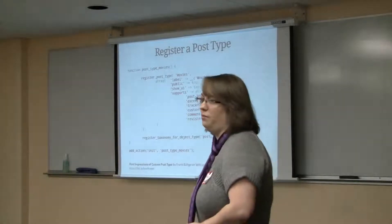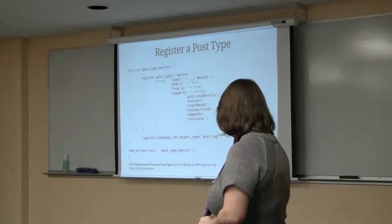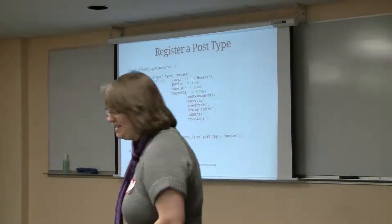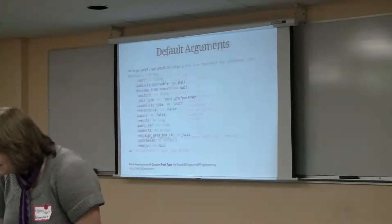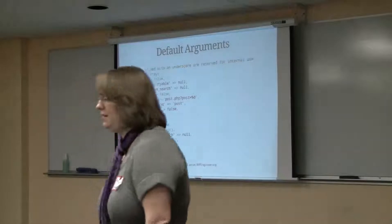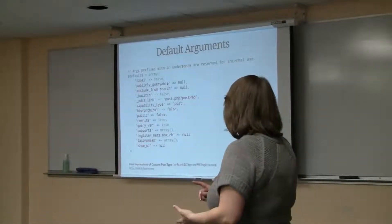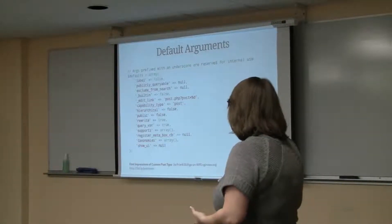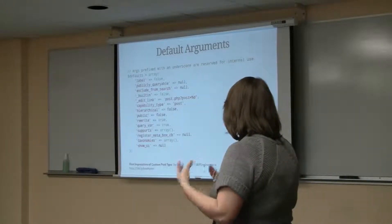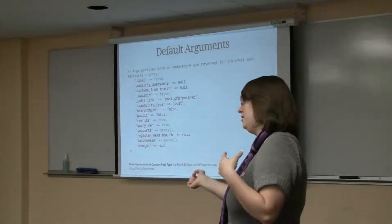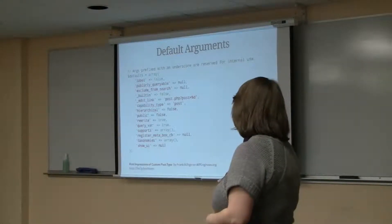The code is from an article I pulled thanks to Frank from WPEngineer.org. Here are some of your default arguments: the label, public queryable, exclude from search, built-in, hierarchical, rewrite, supports — what kinds of things it supports like post thumbnails, etc. — and show UI.